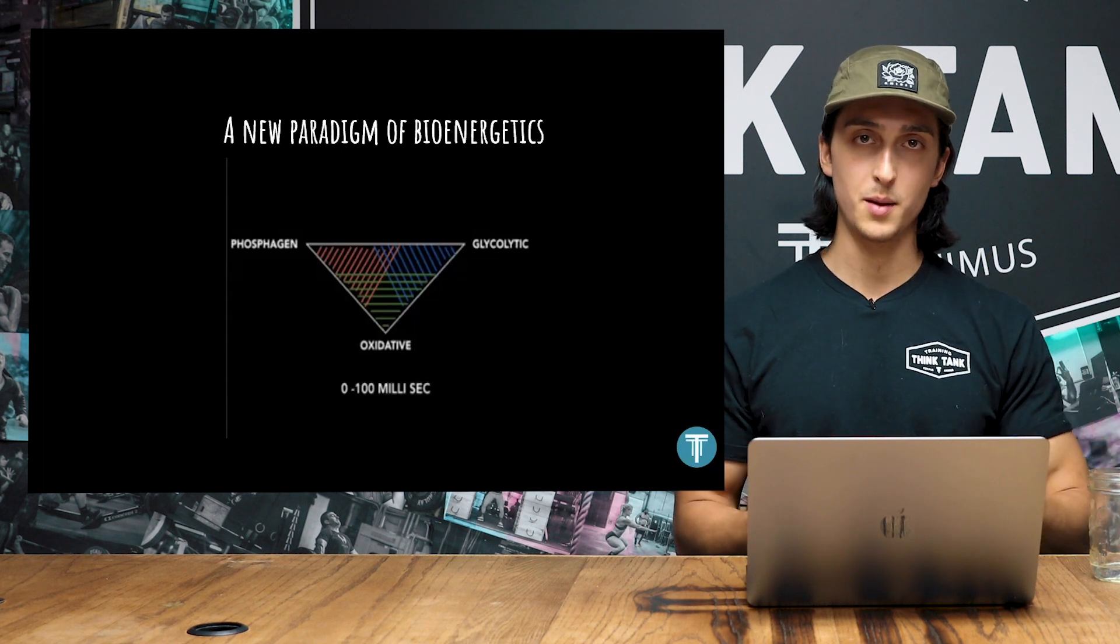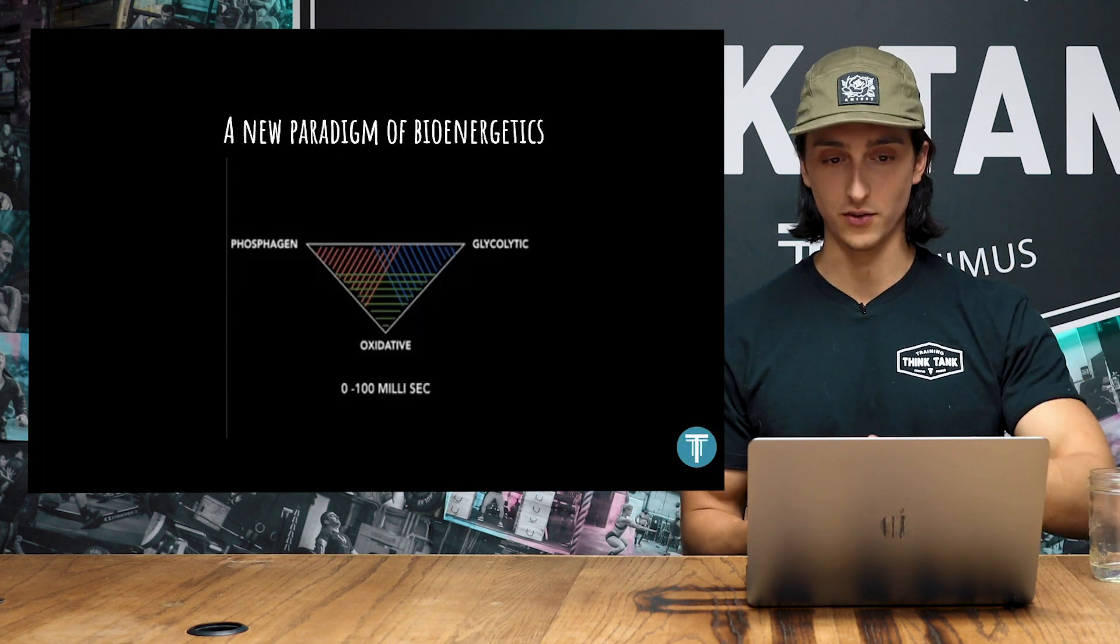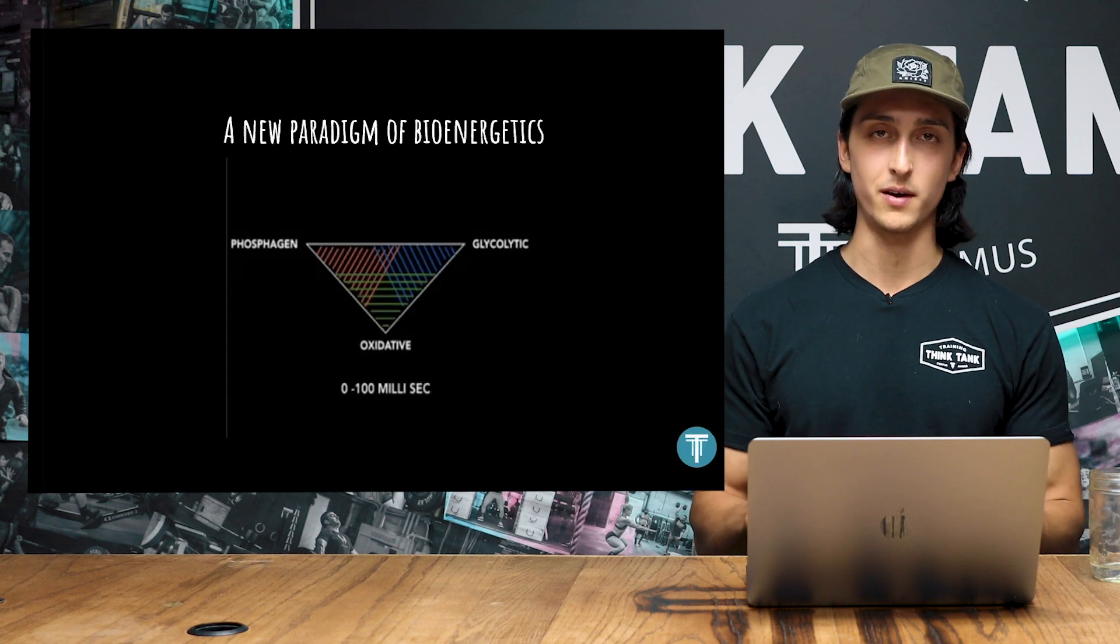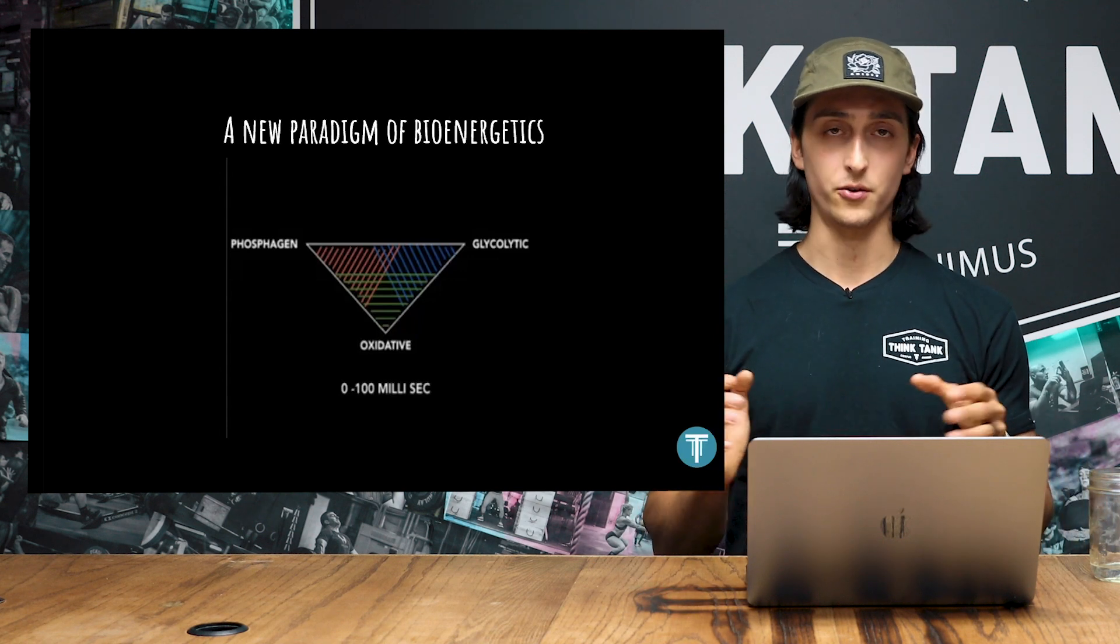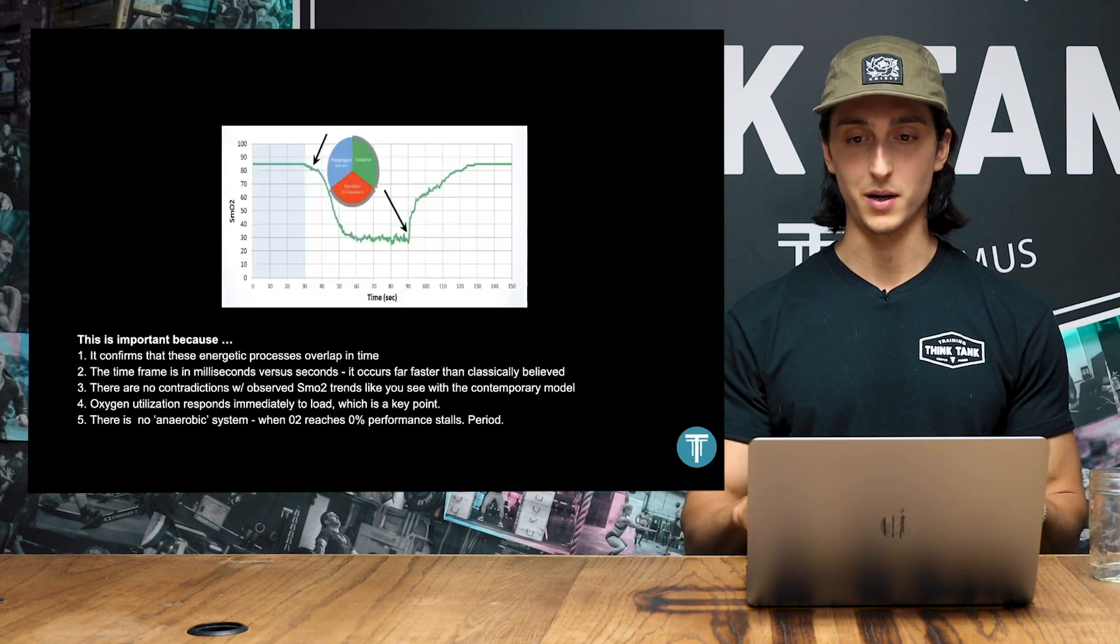And the last thing we see in this model is that oxygen and phosphocreatine systems, these things are completely entangled with one another. So if oxygen's going up, phosphocreatine's going up. If oxygen's going down, phosphocreatine's going down. This is really contradictory to that traditional energy system training model.